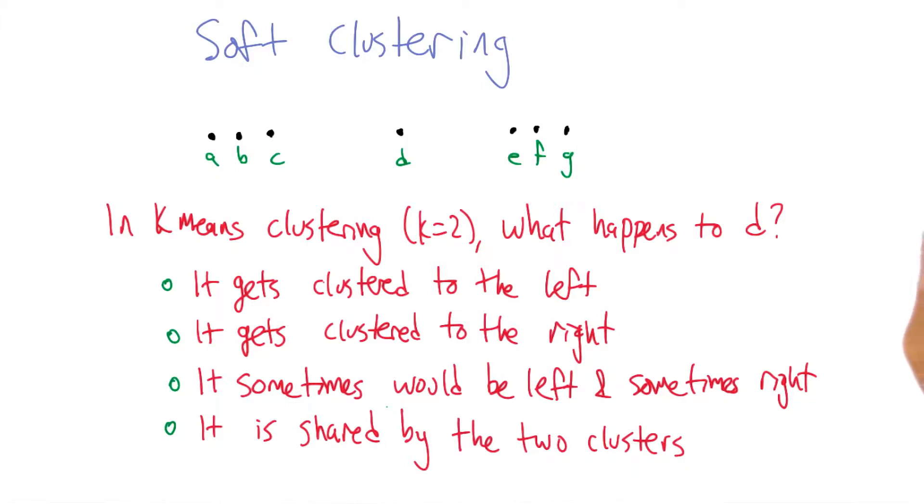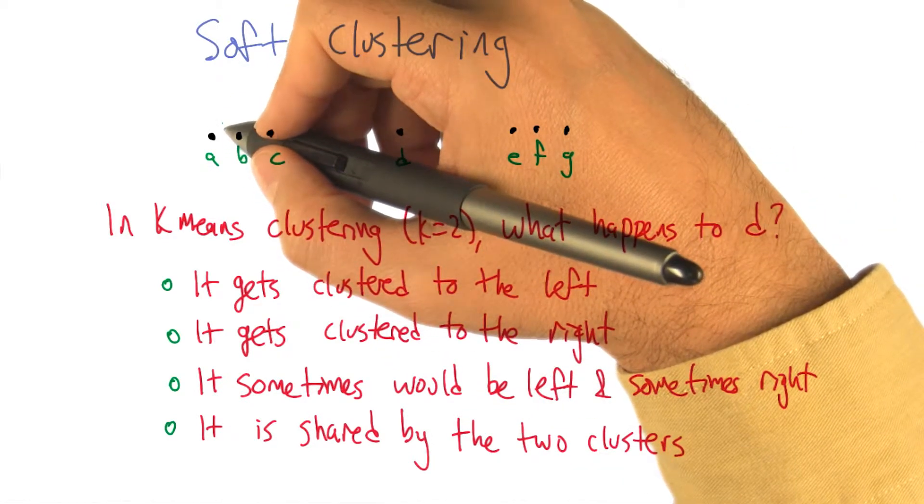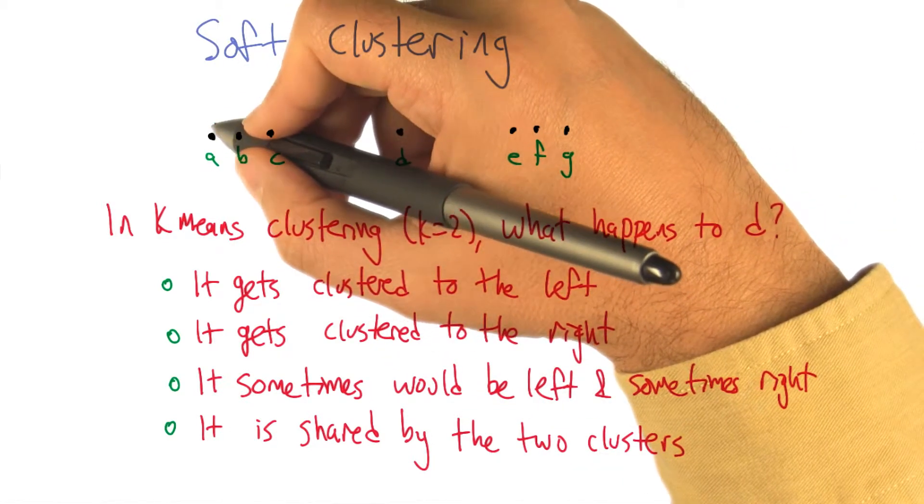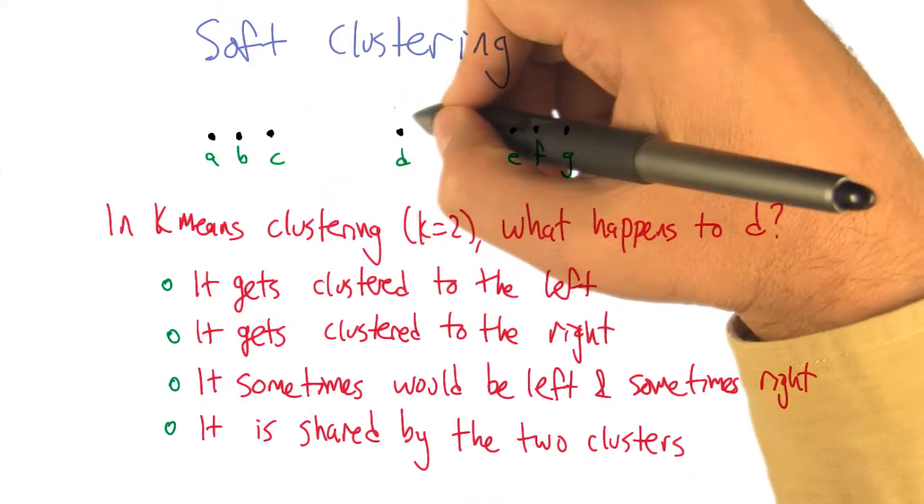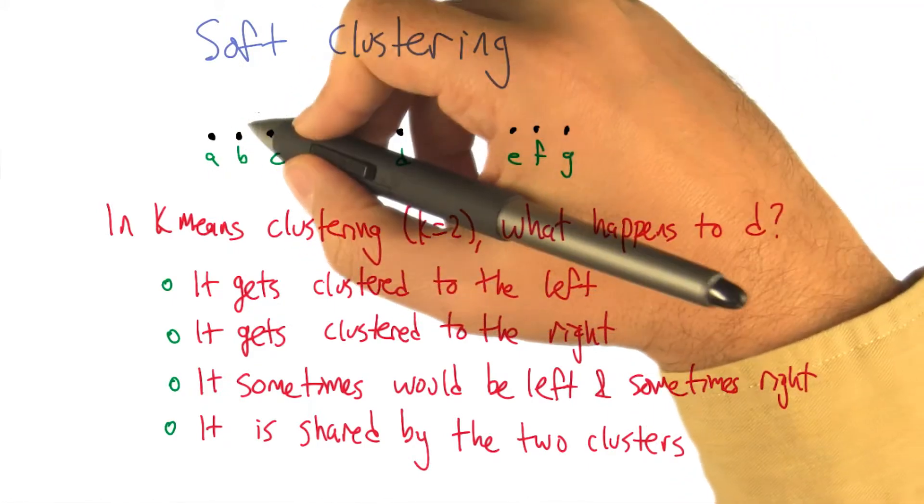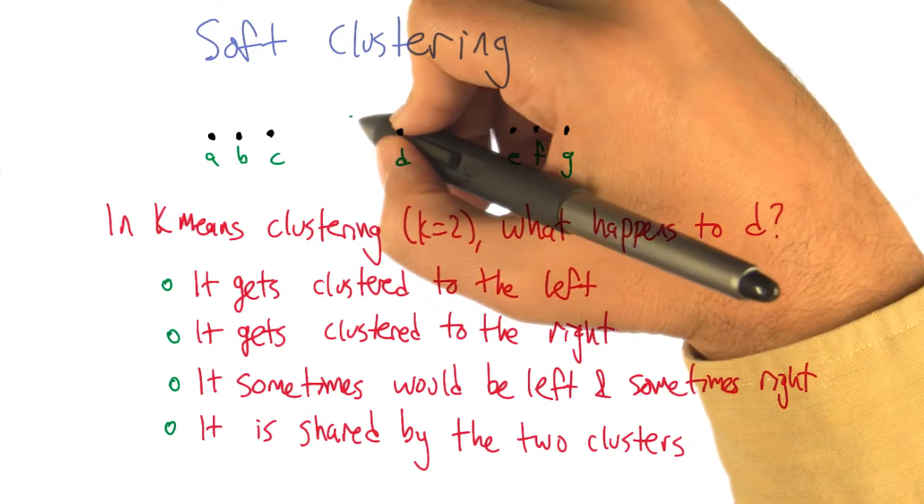So for example, if you start with your random centers on A and B, then I think what'll happen is D will end up on the right. As that point gets dragged over towards the right, it'll drag D with it.